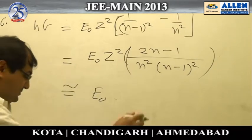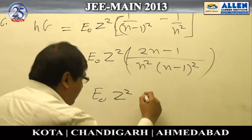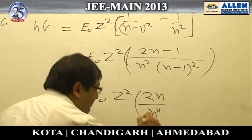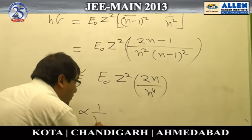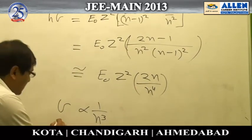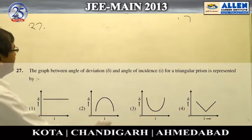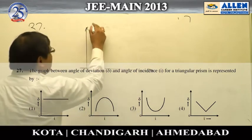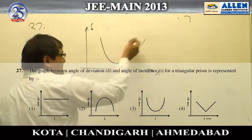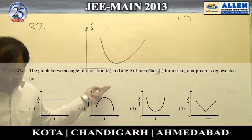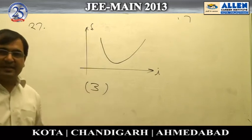— this tells us that frequency is proportional to 1/N³, which makes the fourth option the correct answer for question 26. For question 27, the variation of angle of deviation with angle of incidence in a prism is a straightforward question. The answer is simply this graph, hence option number 3 is the correct option.